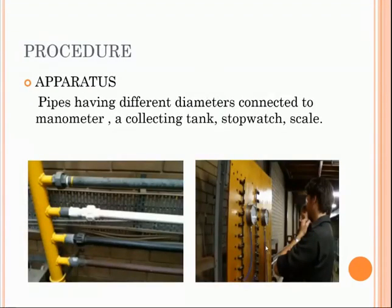The apparatus used in the experiment includes pipes of different diameters connected to a differential manometer, a collecting tank, a stopwatch, and a scale. A manometer is an instrument for measuring the pressure acting on a column of fluid, consisting of a U-shaped tube of liquid in which a difference in pressure acting on the two arms causes the liquid to reach different heights in the two arms.